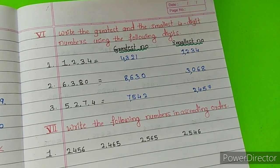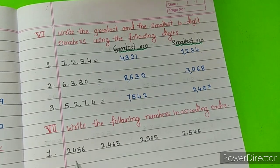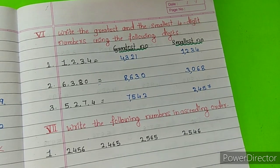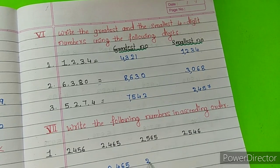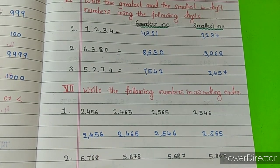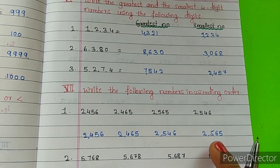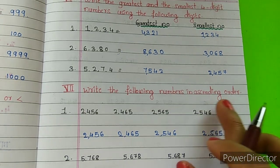So in ascending order: first is 2,456. Next number is 2,465. Afterwards 2,546. Last one is 2,565. This is your first problem written in ascending order.